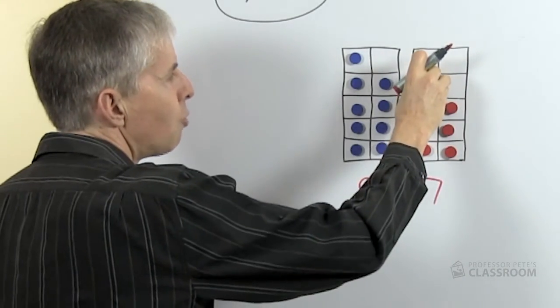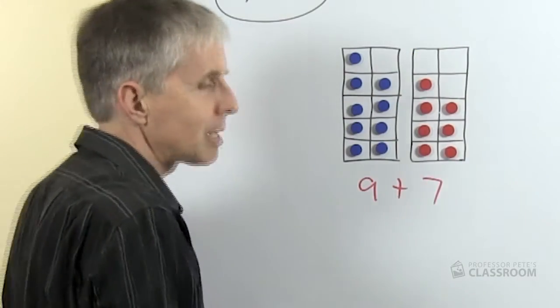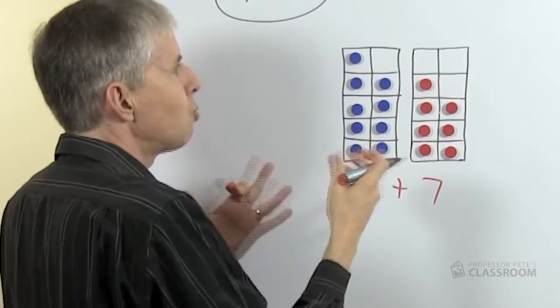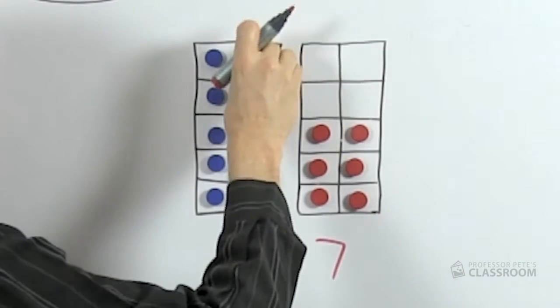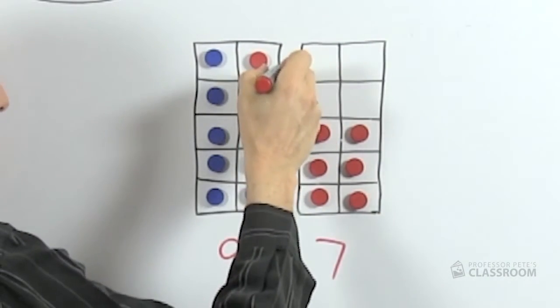If we were to move one of these counters from here, you can see, you can almost say the 9 wants to be 10. It needs just one more and it'll be 10, so if we move one to there, draw a little arrow there.